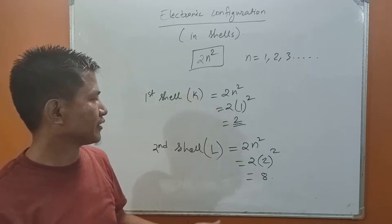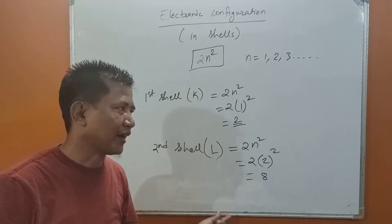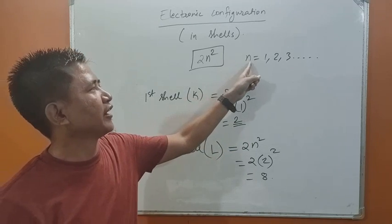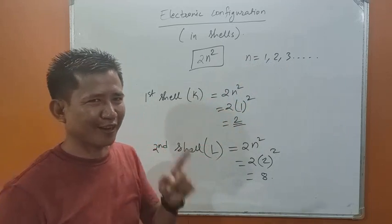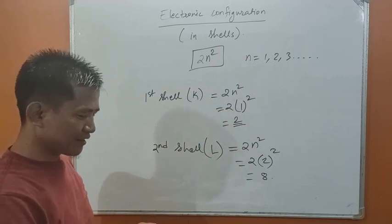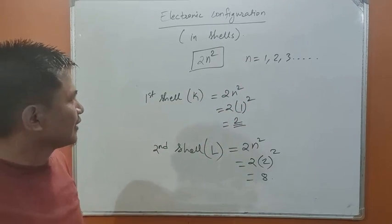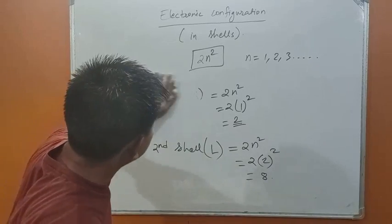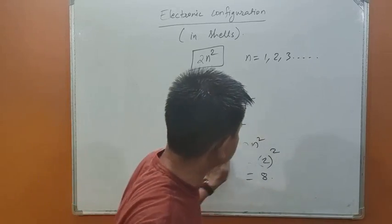After that, the shells are named K, L, M, N, and so on, with the value of n increasing similarly. I hope you got this. Now let's take an example to understand this better.